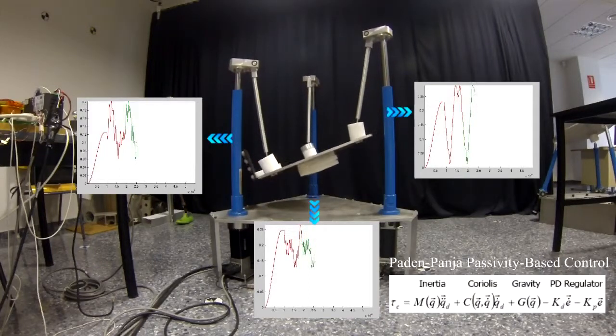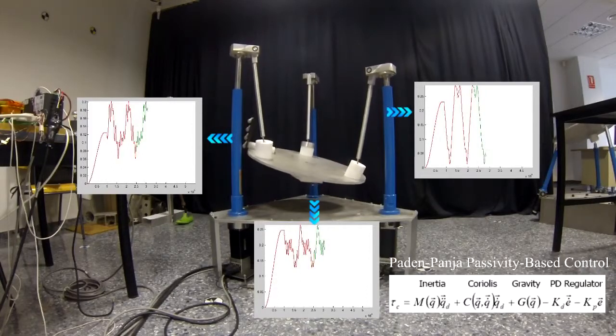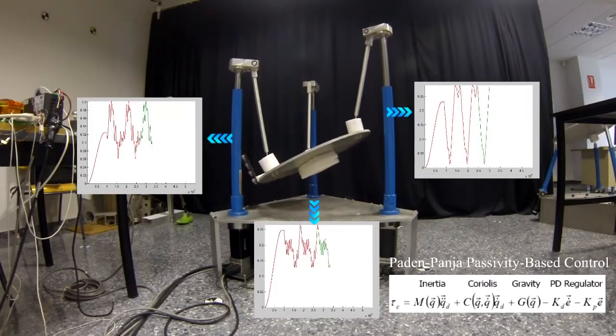The controller has a compensation of the dynamic parameters of the robot: gravity, inertia and Coriolis, and a PD regulator.